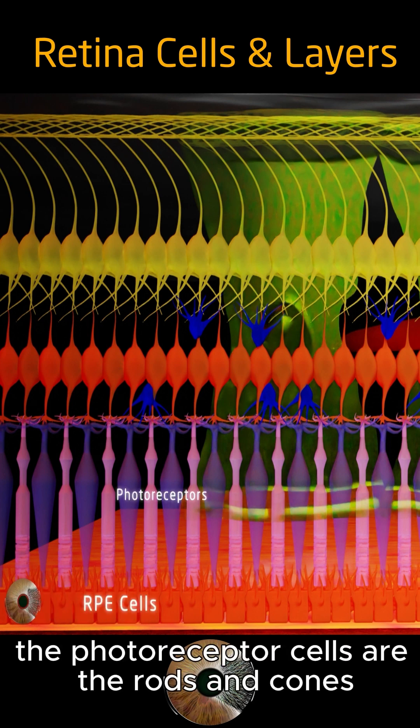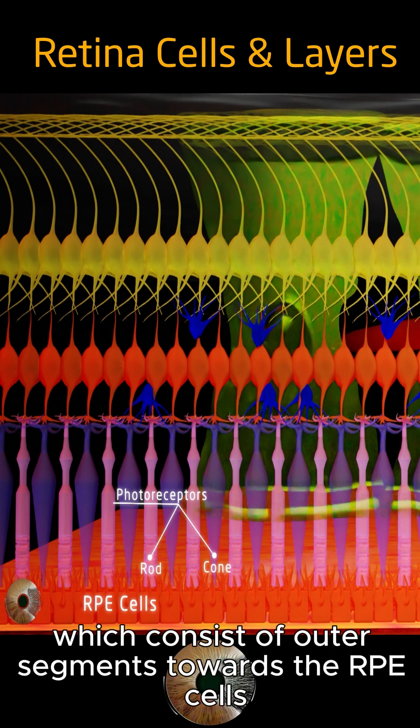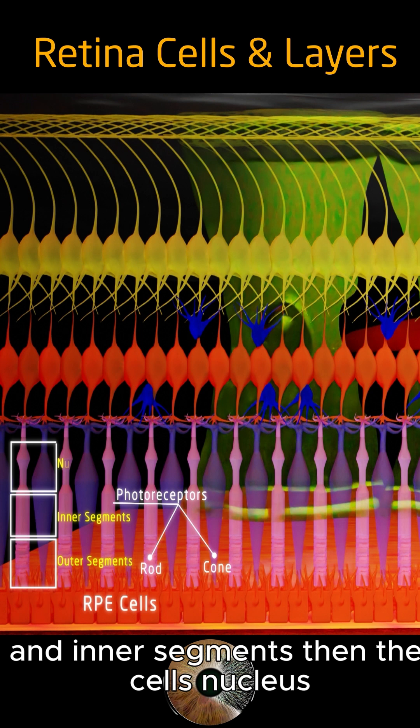The photoreceptor cells are the rods and cones, which consist of outer segments towards the RPE cells, and inner segments, then the cell's nucleus.